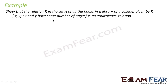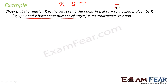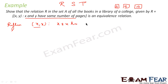Let us take one more example. We have to show that the relation in the set A of all books in the library of the college, given by R = {(X, Y) : X and Y have the same number of pages}, is an equivalence relation. For it to be an equivalence relation it has to be reflexive, symmetric, and transitive. For reflexive: (X, X) should exist, meaning X and X have the same number of pages — which is always true for any book compared to itself. So it is reflexive.